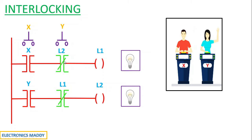For example, let us consider a case where X knows the answer and X presses the push-button switch first. The contact corresponding to X gets energized, the rung corresponding to X gets energized, and the light glows for L1. Once L1 is energized, the address of L1 is also present in the rung for Y, so that normally closed contact becomes de-energized — indicated in red — and acts as an open circuit.